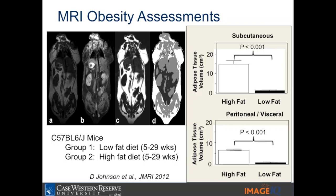Looking at the subcutaneous compartment, we see high-fat and low-fat dietary mouse models with really big differences between those two groups — both in subcutaneous as well as peritoneal adipose tissue volumes. This particular capability has been used maybe 500 to 1,000 times over the past five to seven years. The alternative is to sacrifice the animal, excise tissues, and do weight measurements — which means you can't track longitudinal studies or do developmental studies. When you're doing MR and you don't have to sacrifice the animals, you have a smaller cohort and can do a longitudinal study without sacrificing the animal. And you can use MRI to scout your animal and actually target where you do your histology.